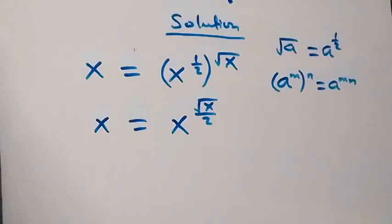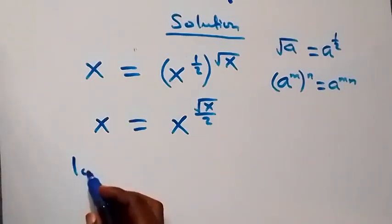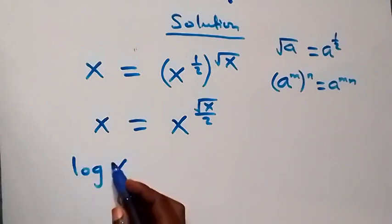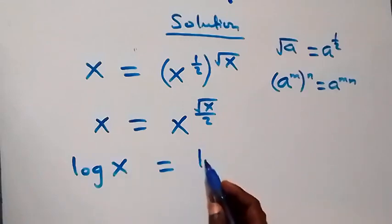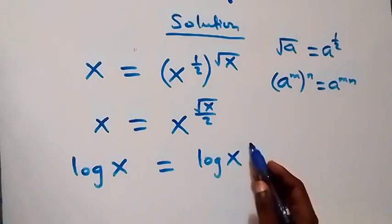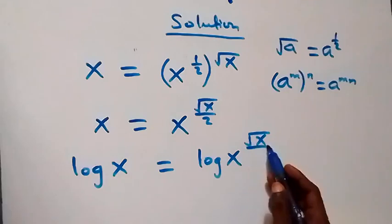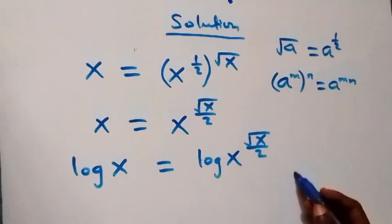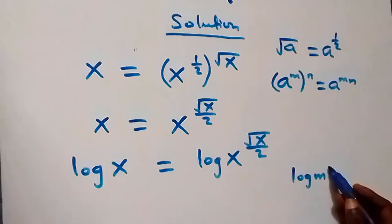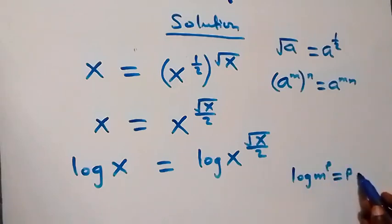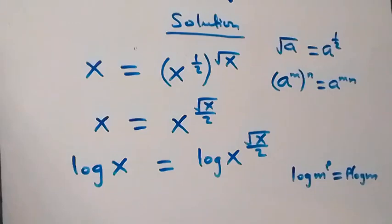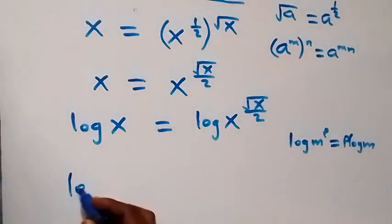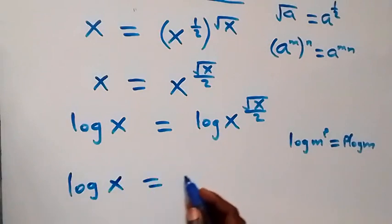Then the next step: let's take the log on both sides. We have log x equals log of x raised to power root x over 2. Applying the power rule of logarithms — log m raised to power p equals p log m — the power root x over 2 comes down, and we have log x equals root x over 2 times log x.